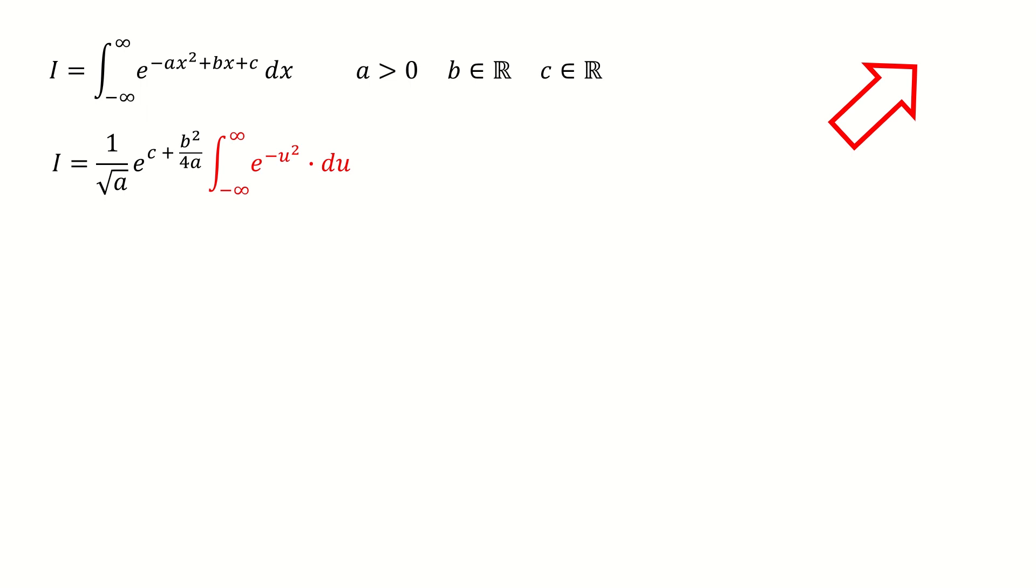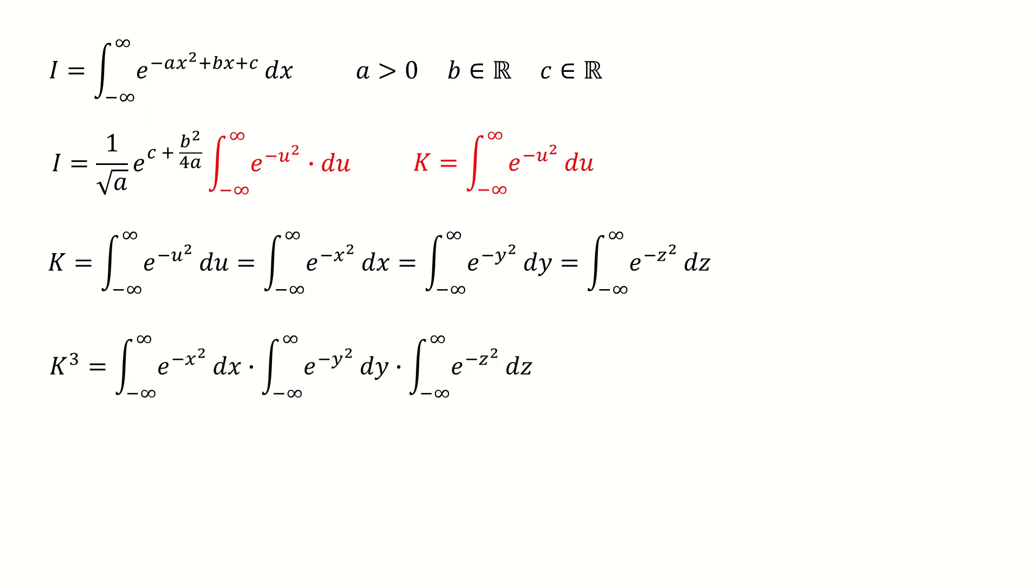We need to solve this integral, which is colored in red. This is the core part. We define this integral as capital K. Because this is a definite integral, we are free to choose the integration variables. So I choose x, y, and z as integration variables.